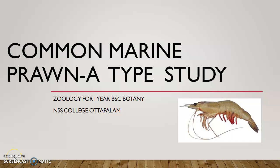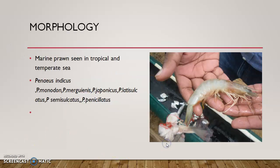Hi everyone, we are going to discuss about the common marine prawn Penaeus. The common marine prawn Penaeus is found in tropical and temperate seas. It's a marine prawn.